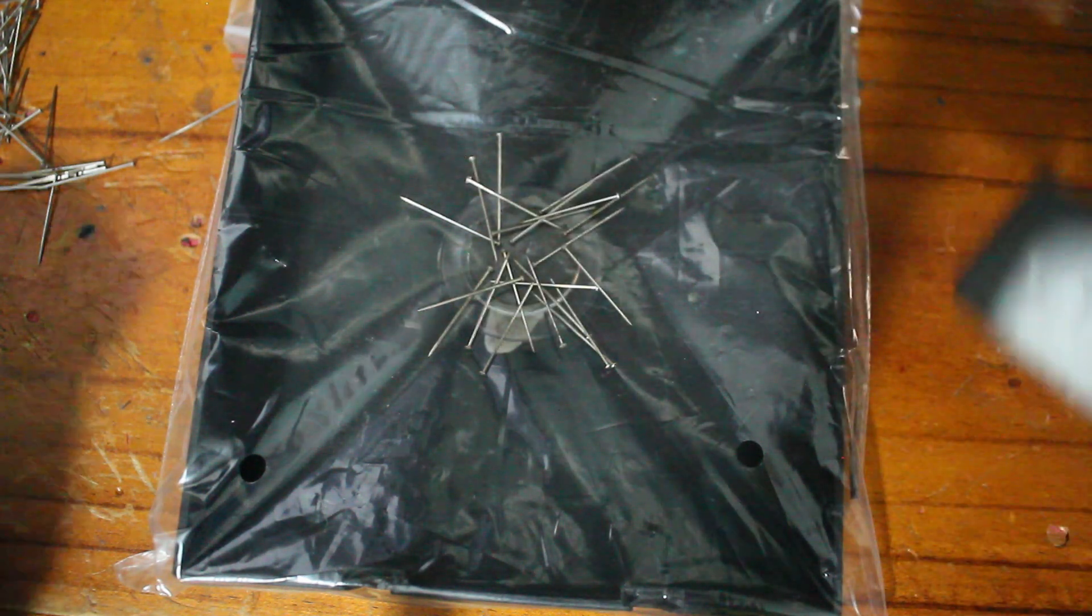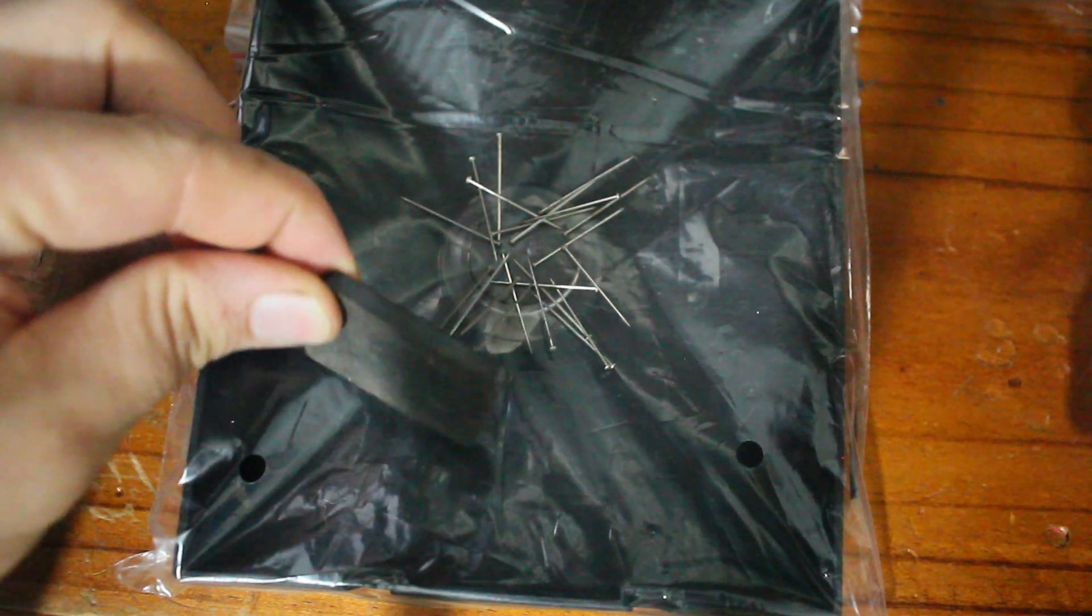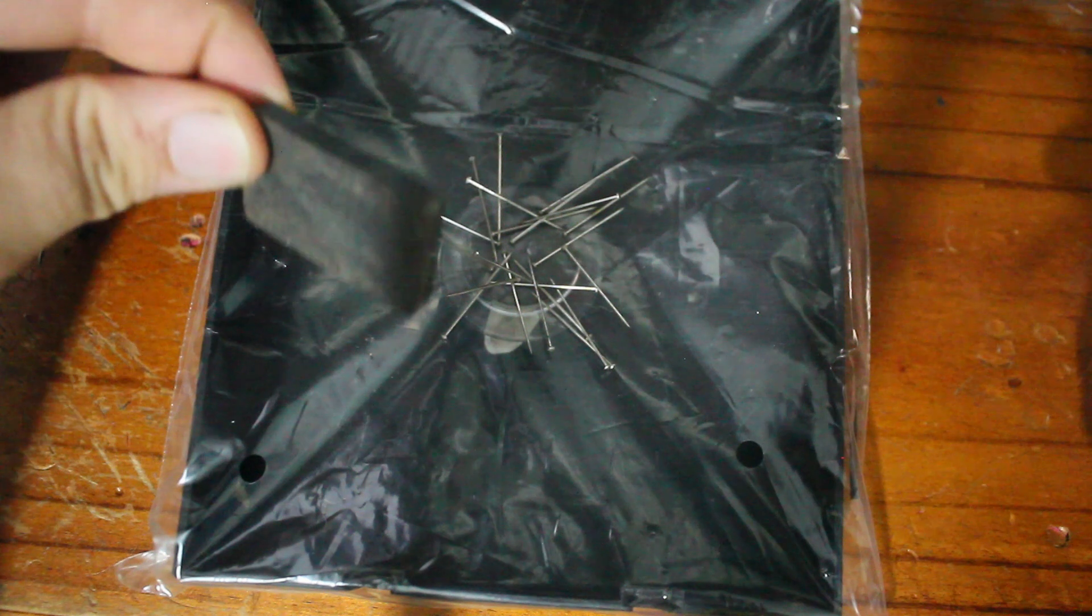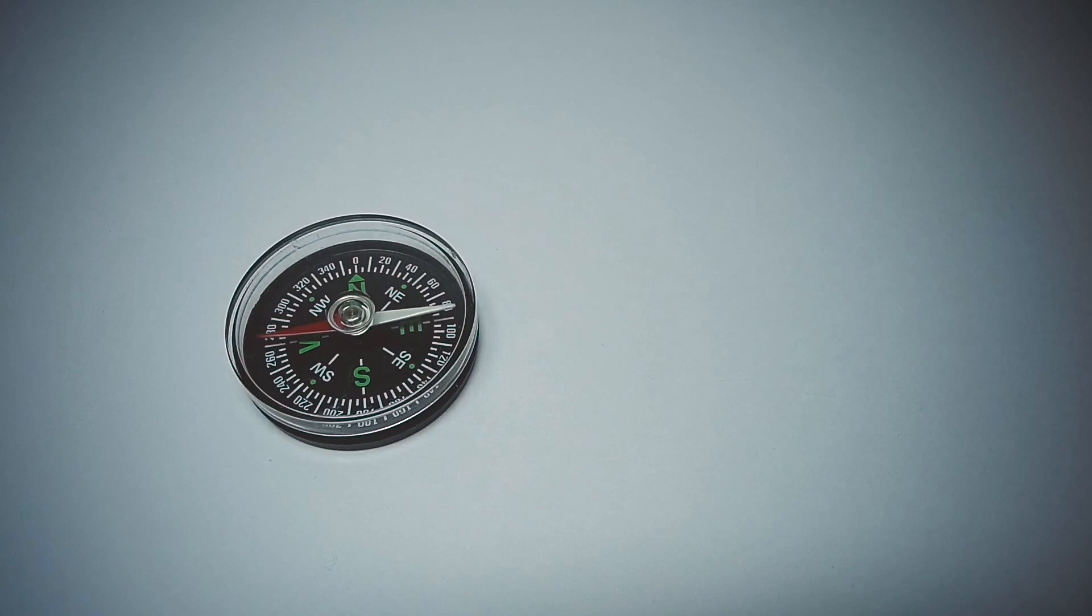When you think of a compass, you think it points to true north, but that's not the case. North, as it is in the magnetic sense, is actually 11 degrees off from true north. This means that when your compass is pointing north, it's not actually north, but magnetic north.